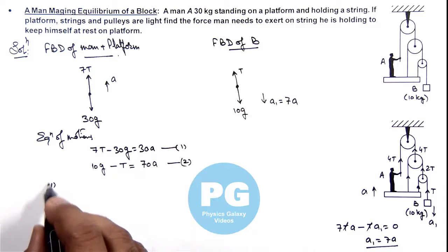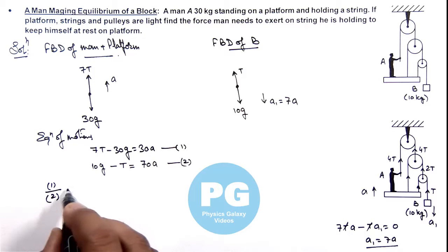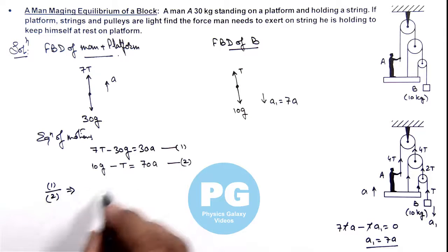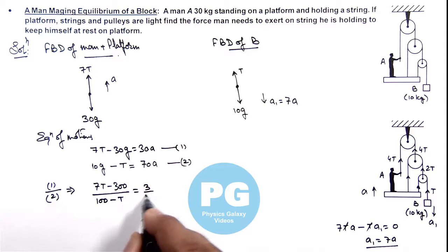Or directly, you can execute equation 1 by 2. If we divide these equations, this will result (7T - 300) divided by (100 - T) is equal to 3 by 7. So further if we simplify this equation by cross multiplying.